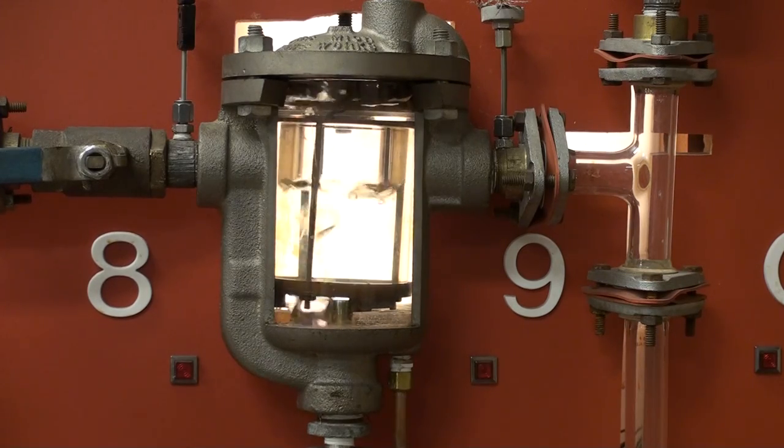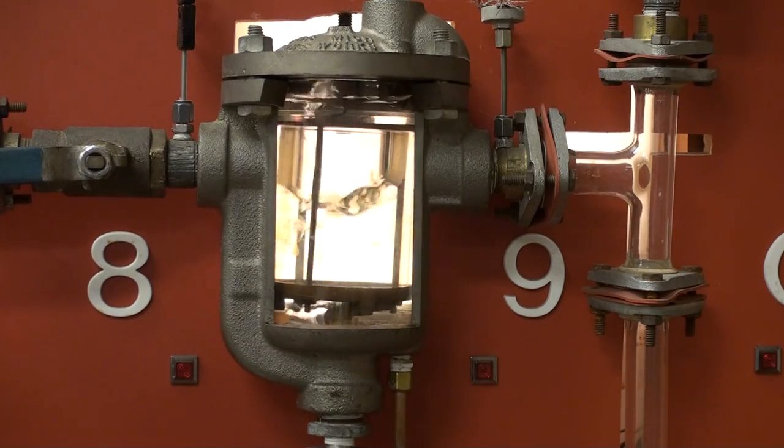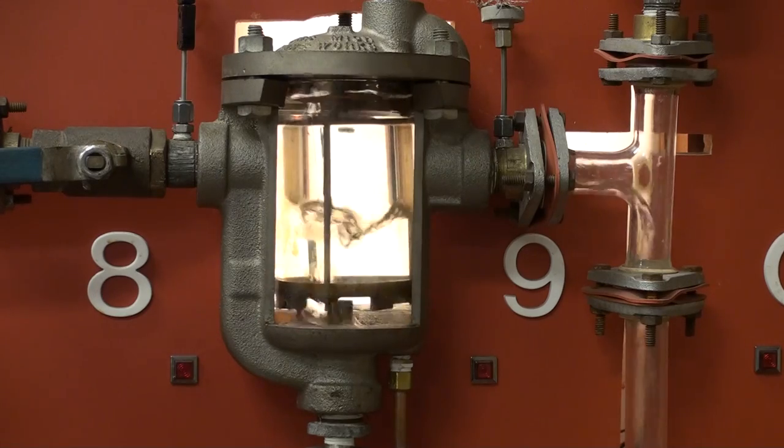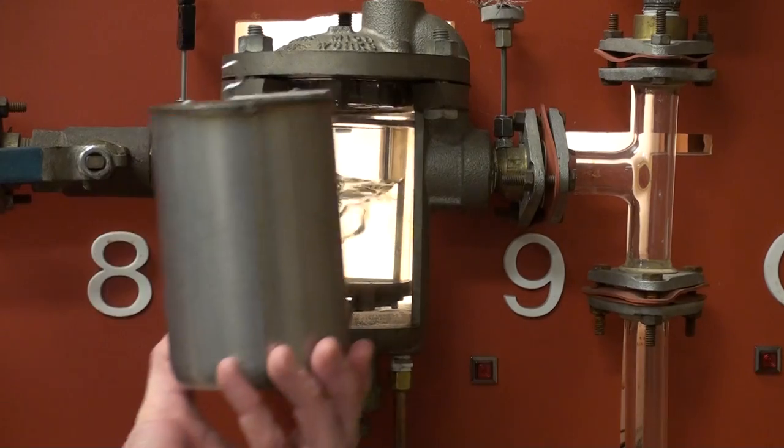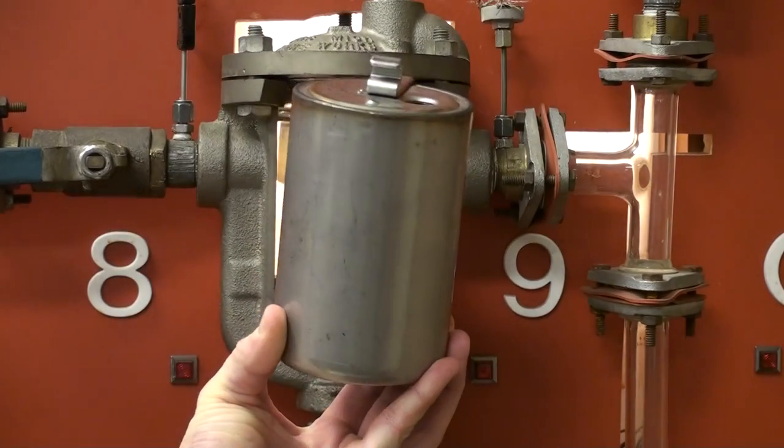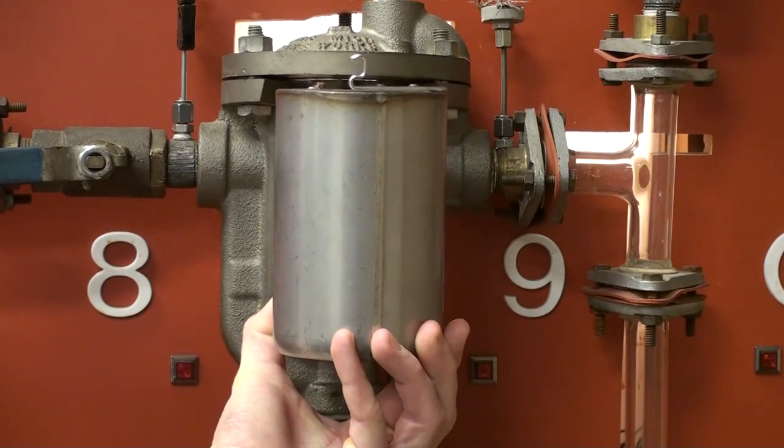The IV steam trap is a continuous drainage intermittent discharge device that operates on the mechanical principle. The heart of the inverted bucket trap is this bucket. In the inverted position, it acts as an open float.